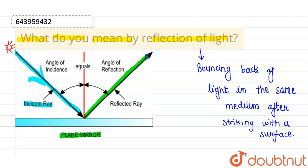And this is the ray which bounces back. And this is known as reflected ray. And this is the direction of reflected ray.